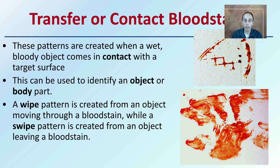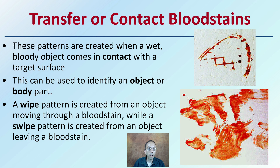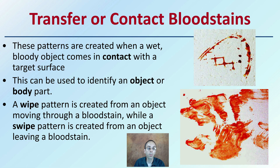We also have transfer or contact blood stains. These patterns are created when wet, bloody objects come into contact with a target surface, and this can be used to identify the object or the bloody part. A wipe pattern is created from an object moving through blood stains, while a swipe pattern is created from an object leaving a blood stain — an important distinction.